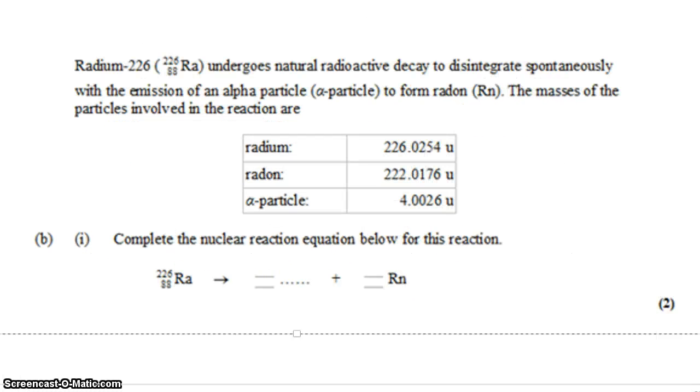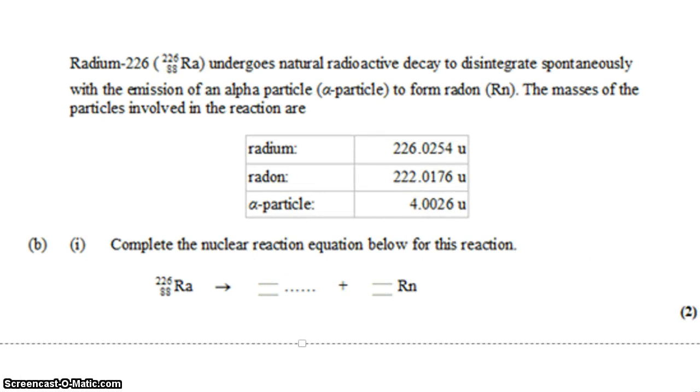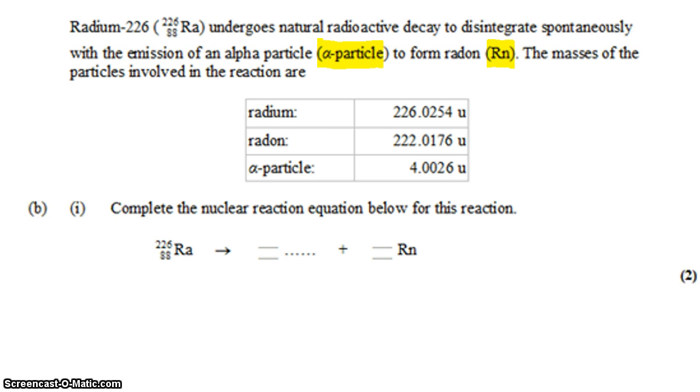We have radium-226 that undergoes radioactive decay to spontaneously form an alpha particle and radon. We're given the masses, but that's for a different part of the question that we're not going to do just yet, so we can ignore the masses for now.